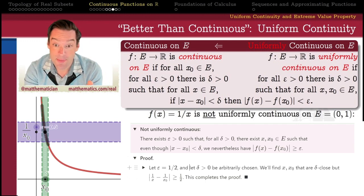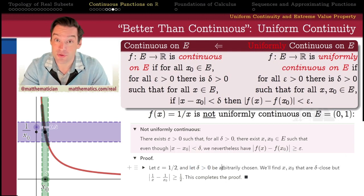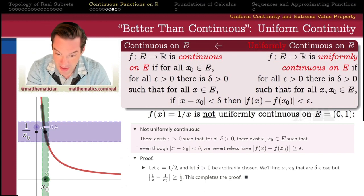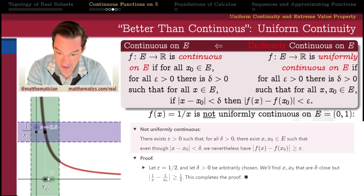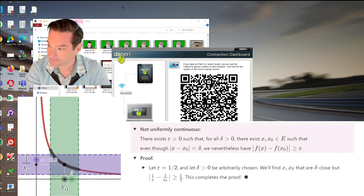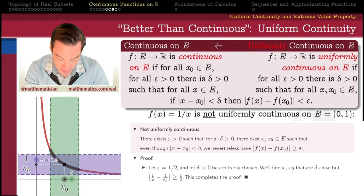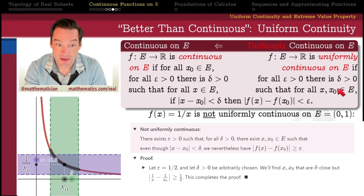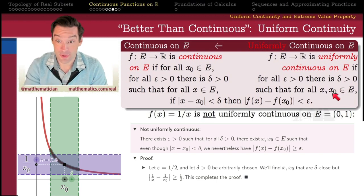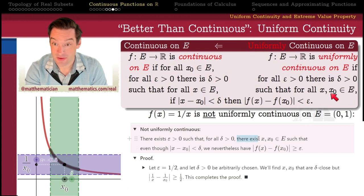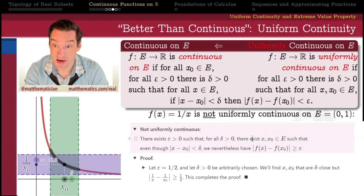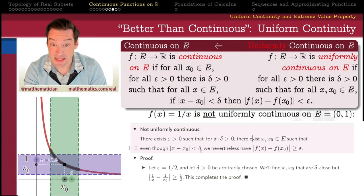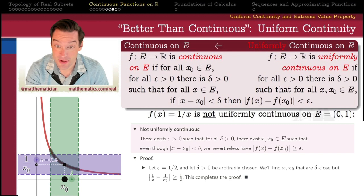Then the universe comes in and picks a delta. This is the problem with the negation proof: we don't have any control as authors over the delta that gets picked. I'm going to imagine that delta has been chosen for us by the universe without putting in a specific value. After that delta gets selected, now we are empowered to find the points x and x₀. We can find them, declare them, bring them into existence however we wish — even very specifically. But the requirement is that x and x₀ need to be delta-close for the delta the universe selected, while their images need to be epsilon-separated.